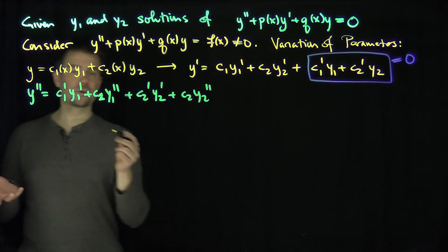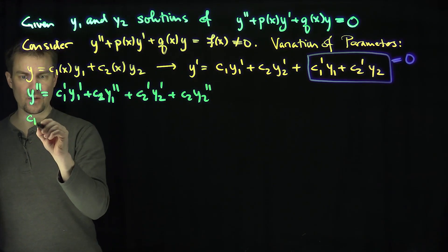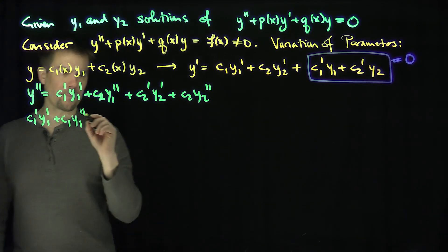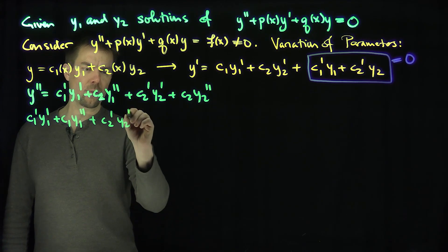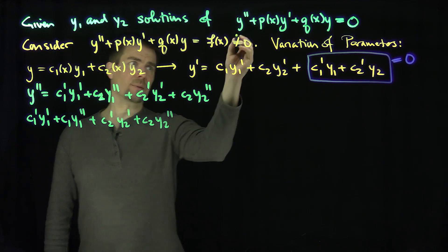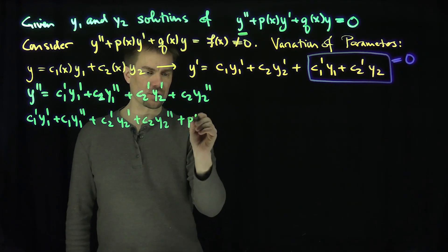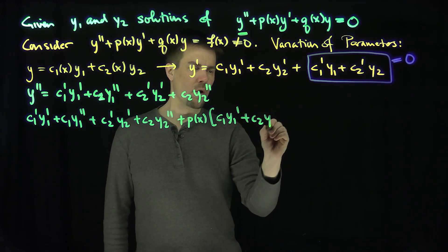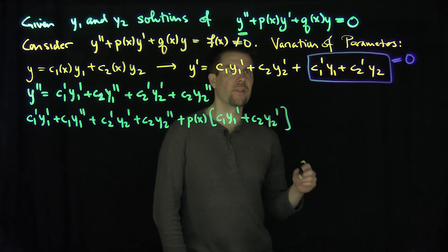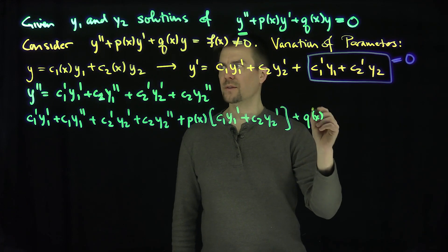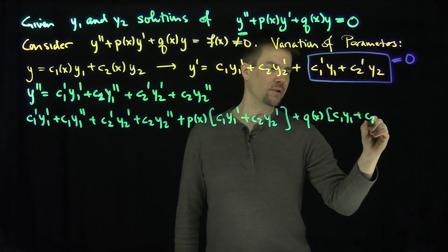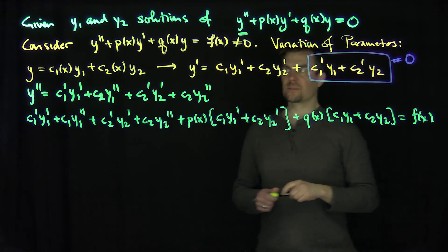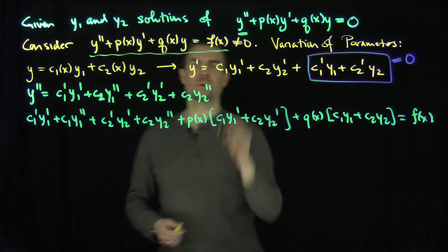Now we fill this into the original equation. The non-homogeneous equation becomes: c1 prime y1 prime plus c1 y1 double prime plus c2 prime y2 prime plus c2 y2 double prime, plus p of x times c1 y1 prime plus c2 y2 prime, plus q of x times c1 y1 plus c2 y2, all equals f of x.